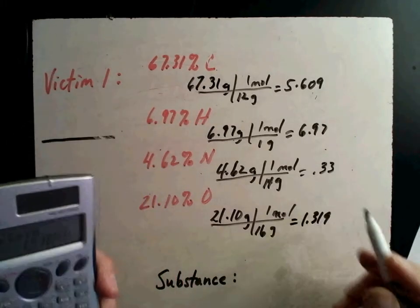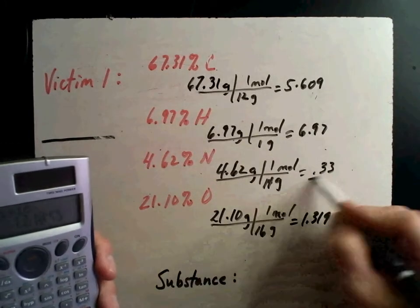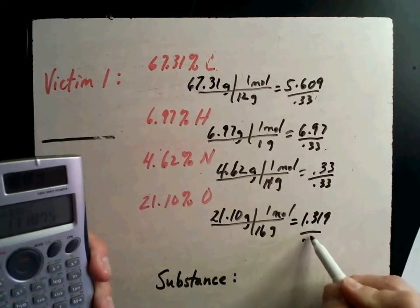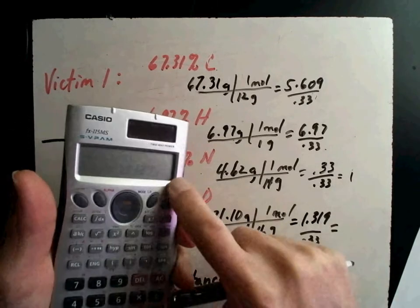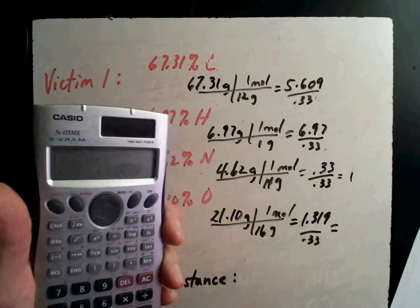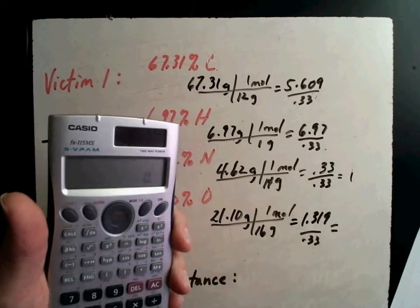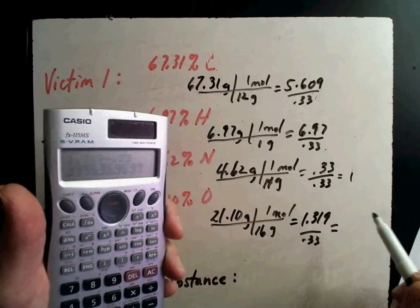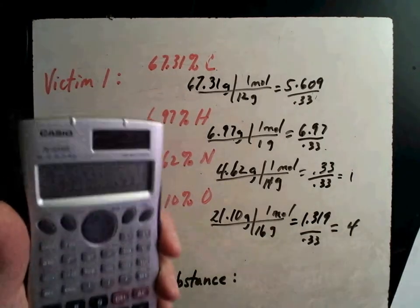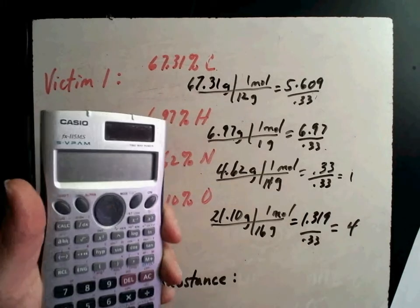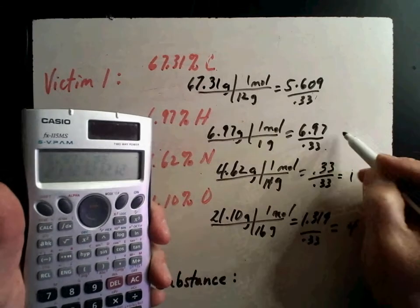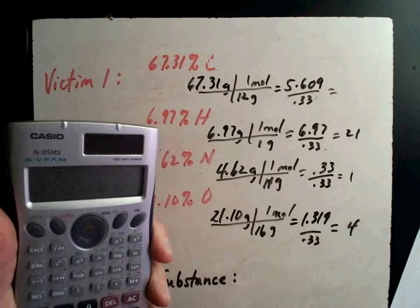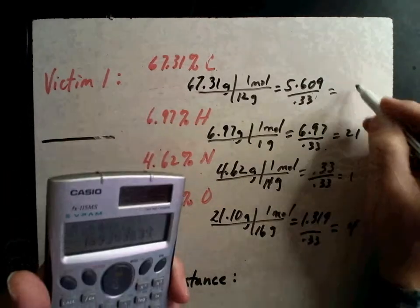So I'm carrying them a couple of decimal places, and here's why. Each of those are mole numbers. Now I divide by the smallest to figure out the ratio between each of the elements in the compound. So I know that that one's a 1. 1.319 divided by 0.33 equals 3.99. That's a 4. 6.97 divided by 0.33 equals 21. 5.609 divided by 0.33, 16.99 was a 17.